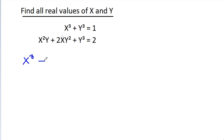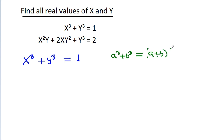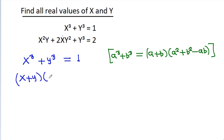We have x cubed plus y cubed is equal to 1. Using the identity a cubed plus b cubed equals (a plus b)(a squared plus b squared minus ab), we get x cubed plus y cubed equals (x plus y)(x squared plus y squared minus xy), which equals 1.